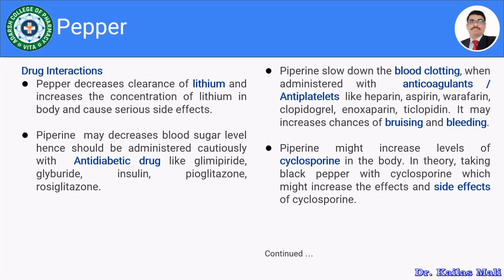Then pepper or piperine with cyclosporine: piperine might increase the levels of cyclosporine in the body. Taking black pepper with cyclosporine might increase the effects and side effects of cyclosporine. One should not combine pepper or pepper-related products with cyclosporine. The underlying mechanism is not known.